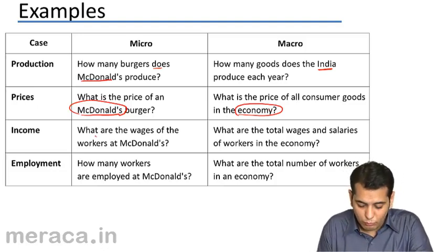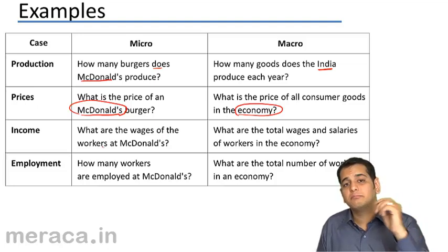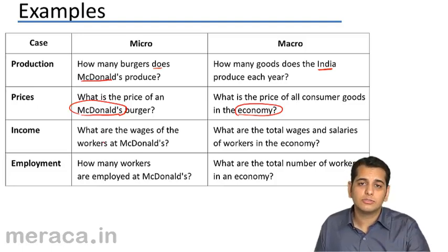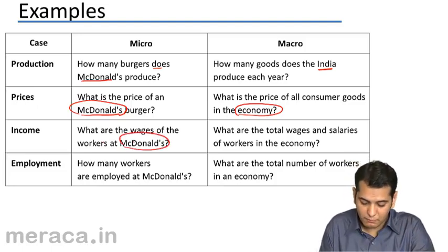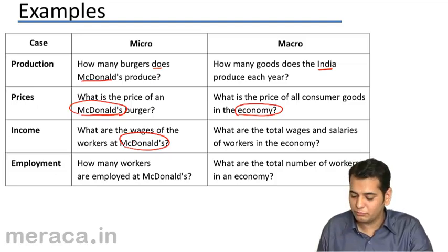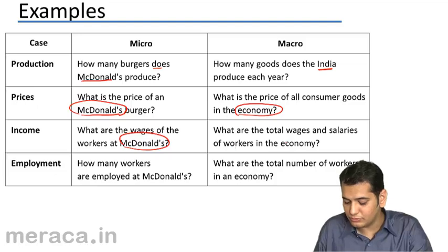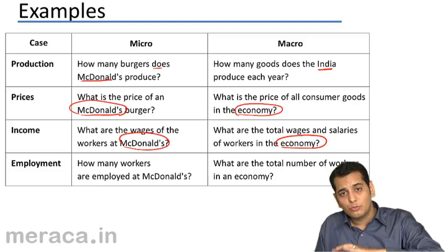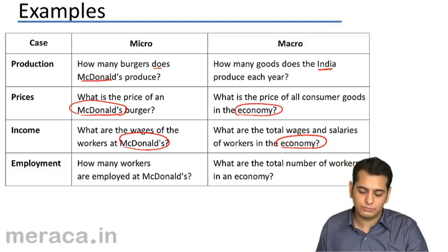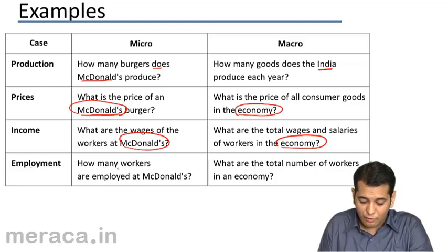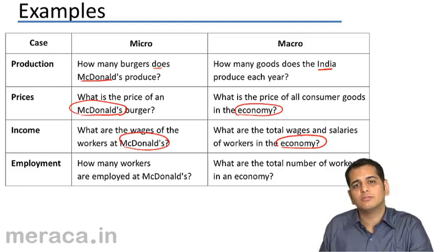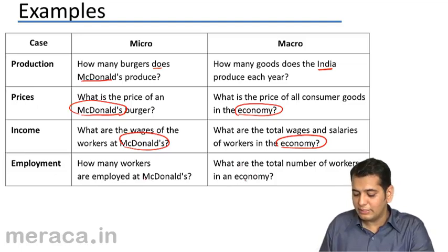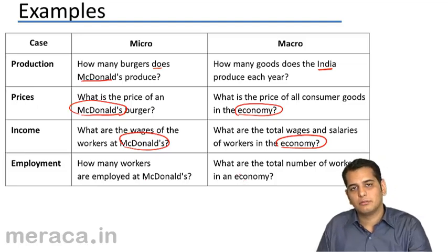In terms of income, microeconomics asks: what are the wages of workers at McDonald's? — concerned with wages at a single firm, a particular unit. Macroeconomics asks: what are the total wages and salaries of workers in the economy? — concerned with total wages and salaries across the nation. In terms of employment, microeconomics asks: how many workers are employed at McDonald's? Macroeconomics asks: what is the total number of workers in the economy?